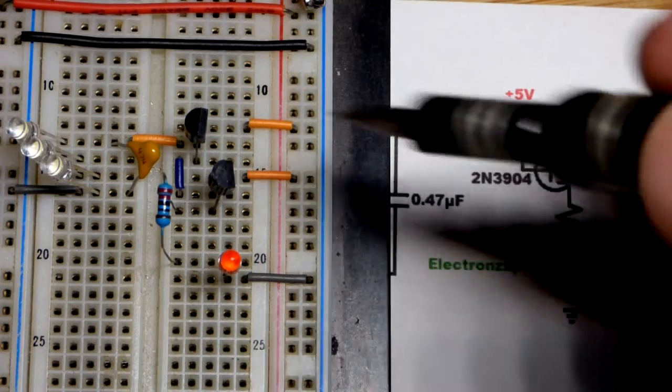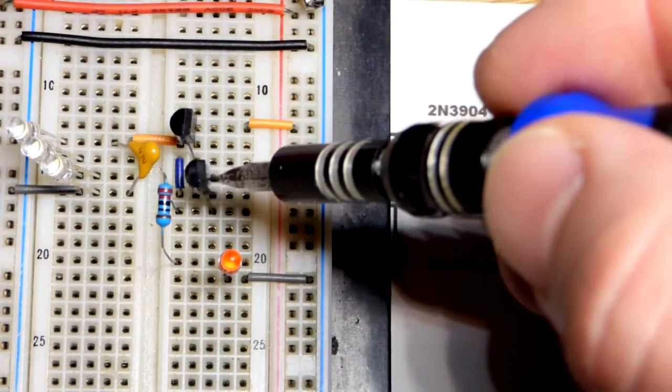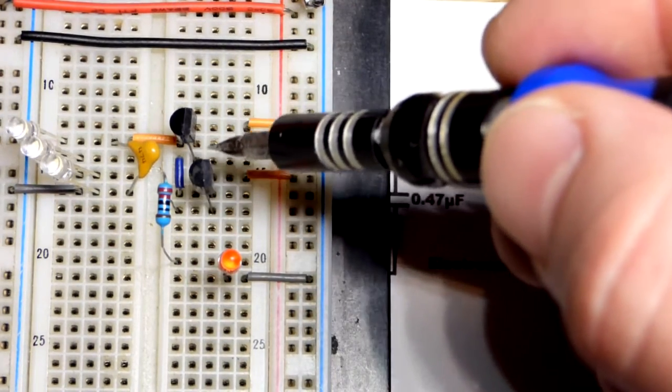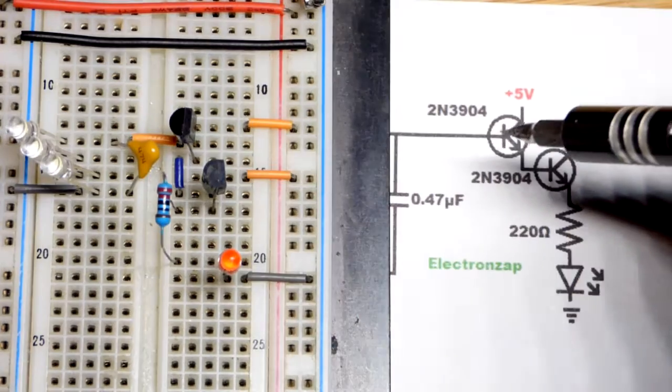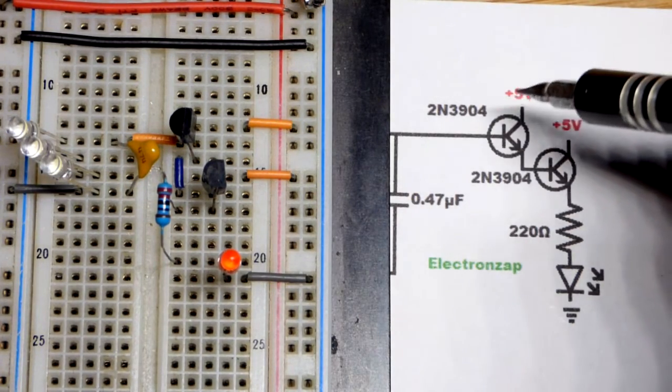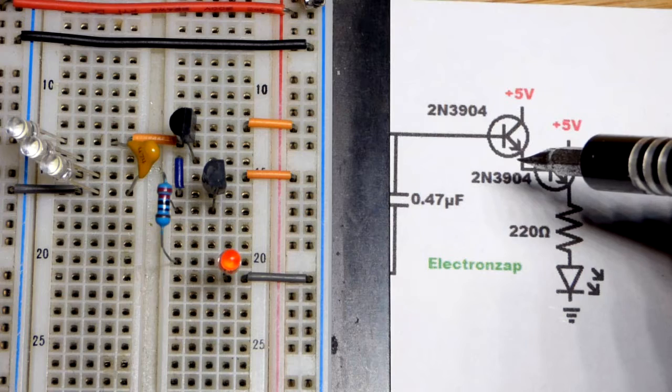We got the base there and these are two 2N3904s, flat side to the right - collector, base, emitter. When a tiny bit of current goes from base to emitter, that lets a lot more current go collector to emitter.